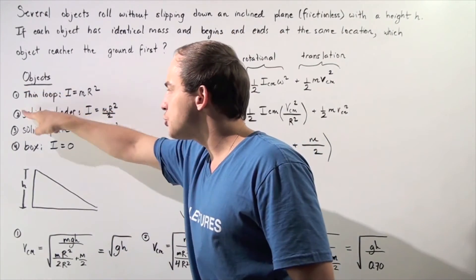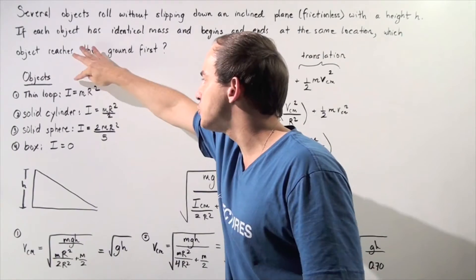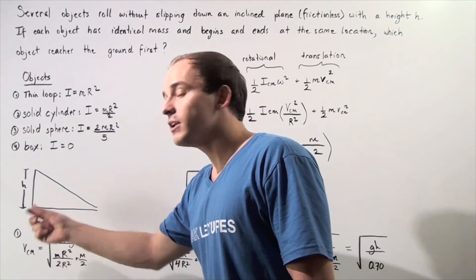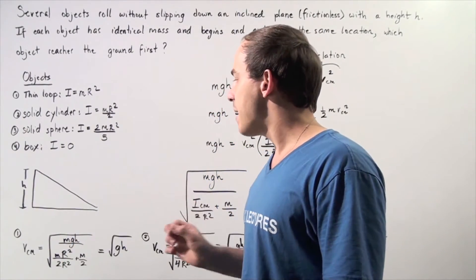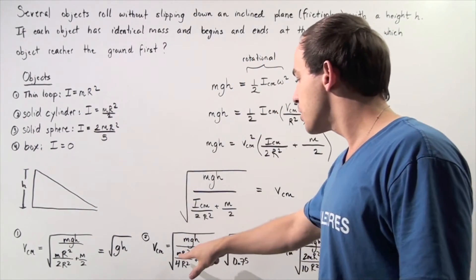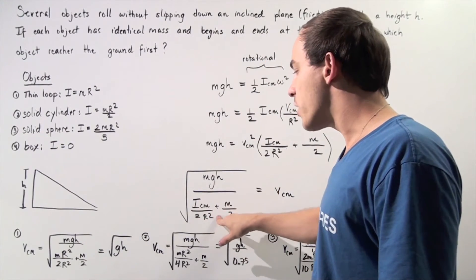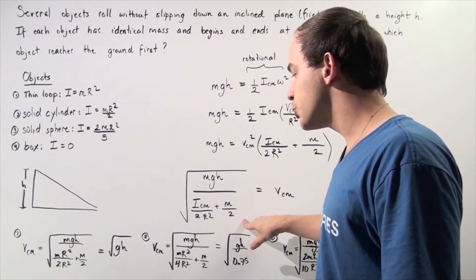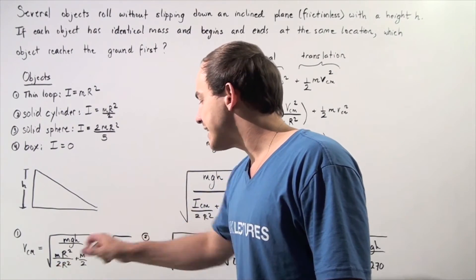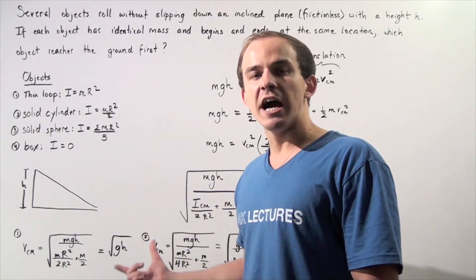Let's consider objects 1, 2, and 3, beginning with object 1. We plug in the rotational moment of inertia I into our equation. The velocity of the object about the center of mass at the bottom of the thin loop equals the square root of MGH divided by — the I is replaced with MR squared, divided by 2R squared, plus M divided by 2. The M's cancel and the R squareds cancel, and the bottom adds up to 1, so we simply get the square root of G multiplied by H.